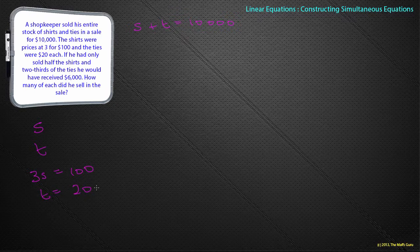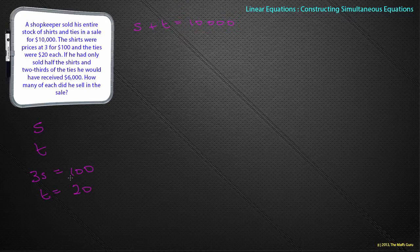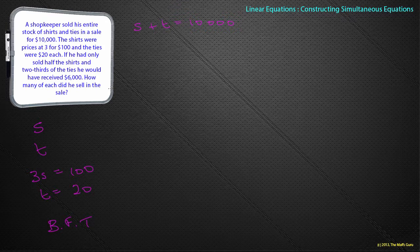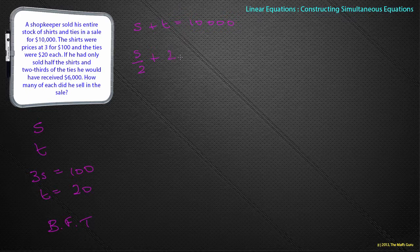I don't know whether that's going to take me anywhere at the moment, but we'll have a look and see. The shirts were priced at 3 for $100. So I know that three shirts are equal to $100. And the ties were equal to $20 each. Now I suppose the trick of this question is actually this information is not needed straight away. It's almost thrown in there to try and trick you. And remember that maths is indeed a BFT, a big fat trick. So let's look at the next set of information. If he had only sold half the shirts, so he sells half the shirts. And is a plus, two-thirds of the ties, he would have received $6,000.